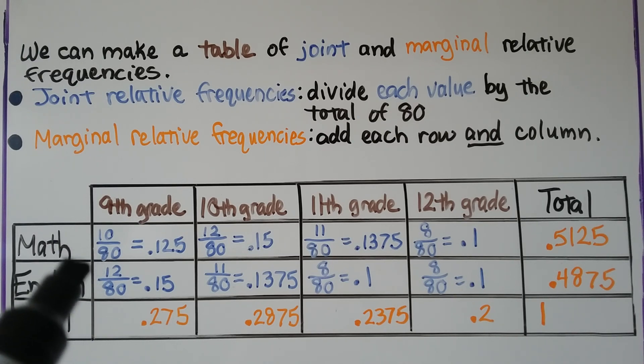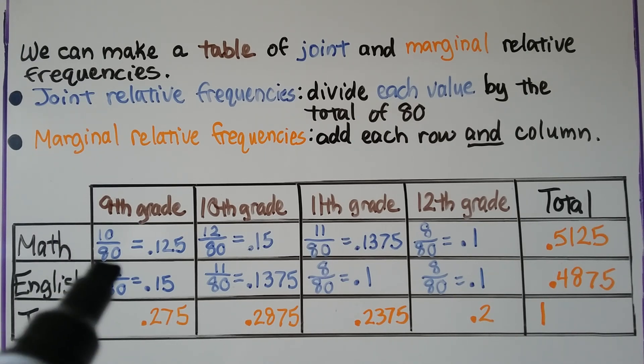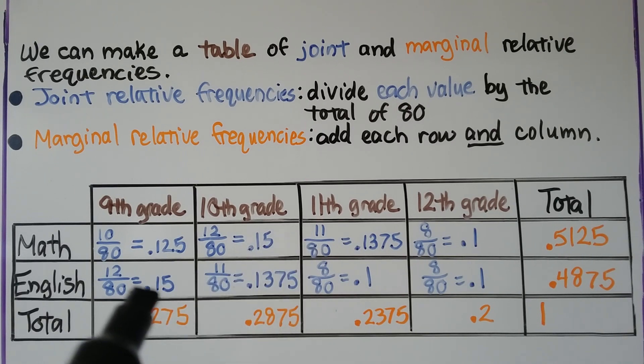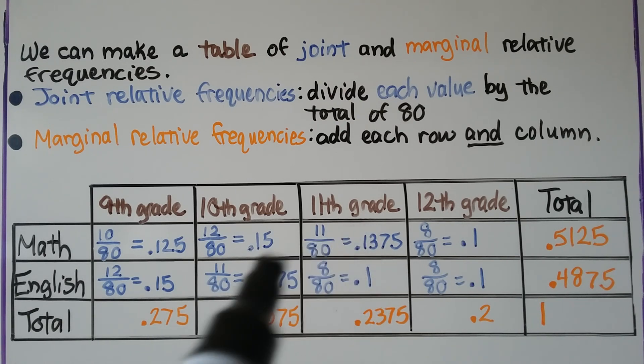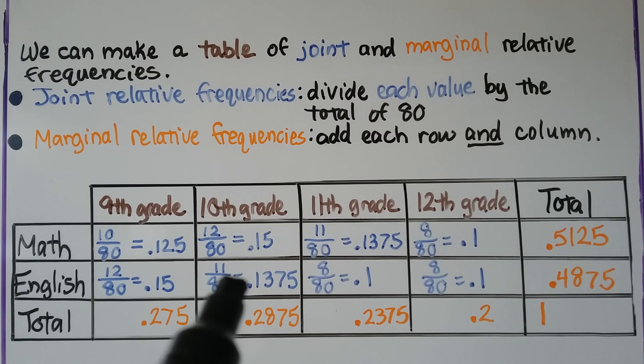For English we had twelve here in ninth grade, that's 12 eightieths, we can take that value because we already did it, that's 0.15. Eleven out of eighty in tenth grade liked English, we already have that value here so we can use the same math, 0.1375.